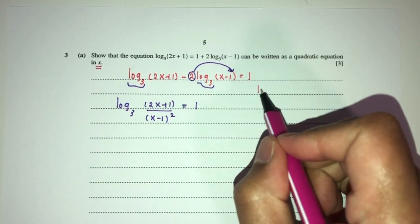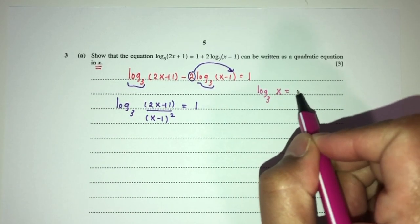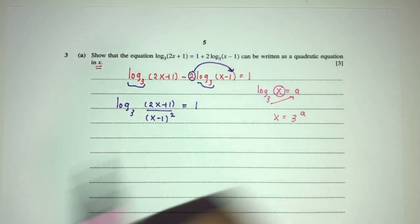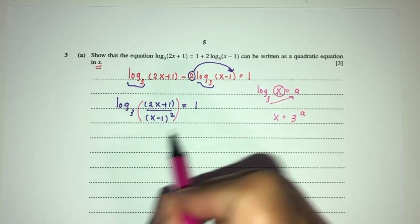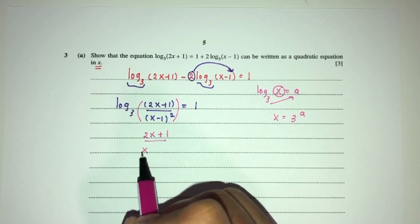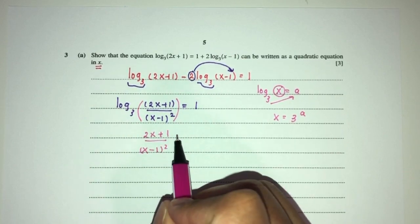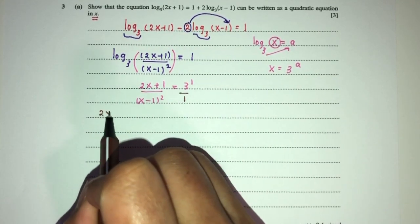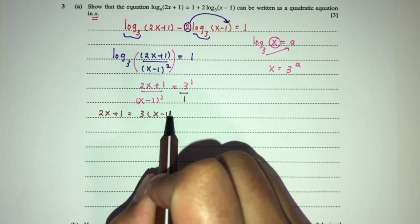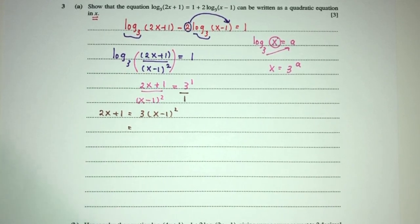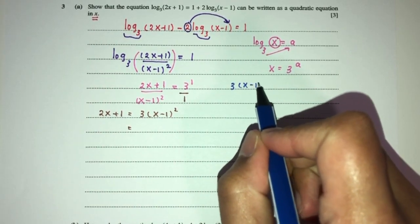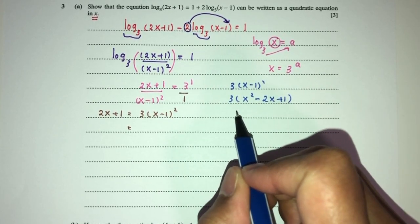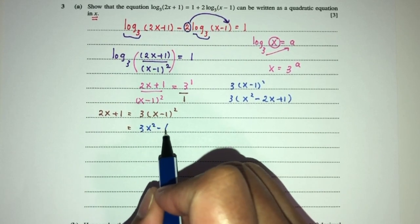When log base 3 of something equals a, that something equals 3 to the power a. So (2x + 1)/(x − 1)² = 3¹ = 3. Cross-multiplying gives 2x + 1 = 3(x − 1)². Expanding: 3(x² − 2x + 1) = 3x² − 6x + 3. So we have 2x + 1 on the left.